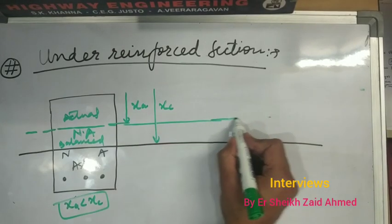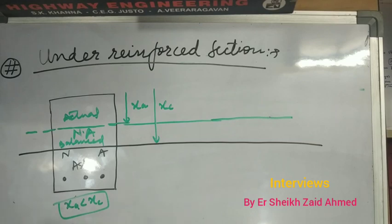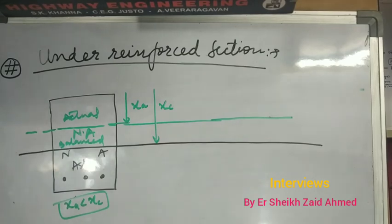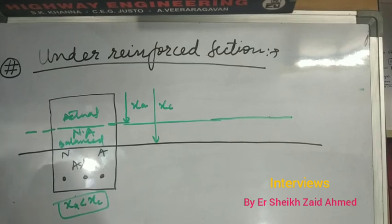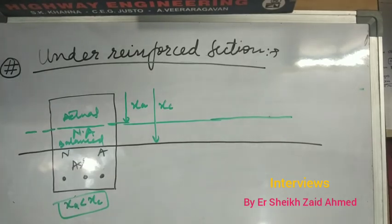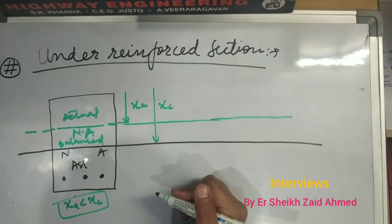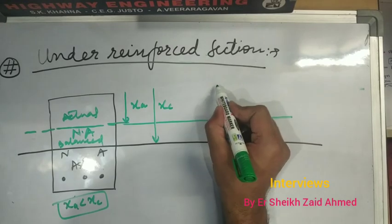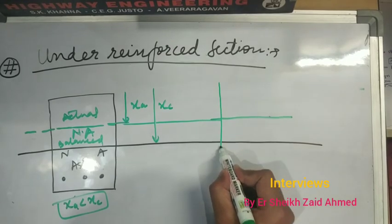Coming to the strain diagram in an under reinforced section — to satisfy the equilibrium condition that total compression equals total tension, this upward movement of the neutral axis continues. The moment resisting capacity builds until the extreme compression fiber reaches its ultimate strain epsilon CU. So the strain distribution diagram can be shown accordingly.